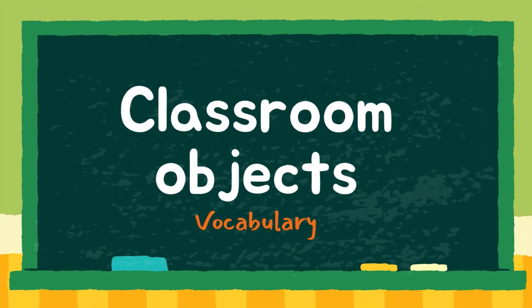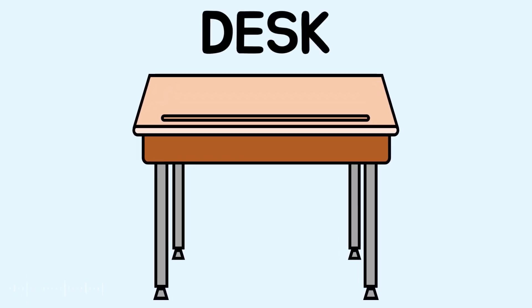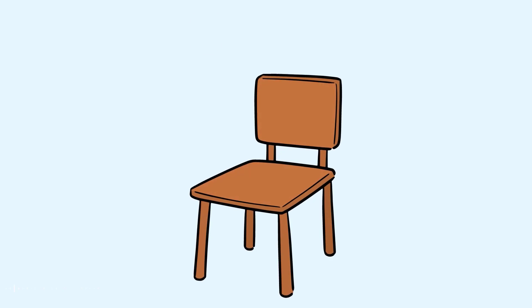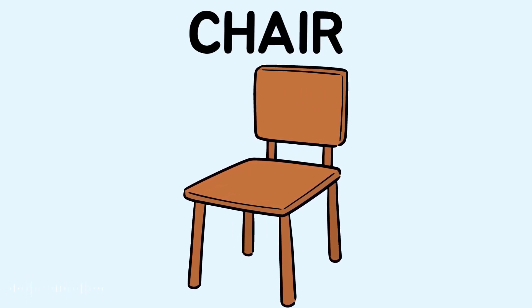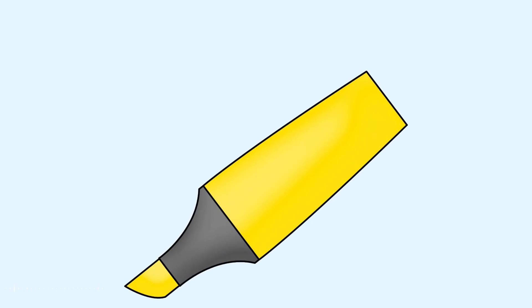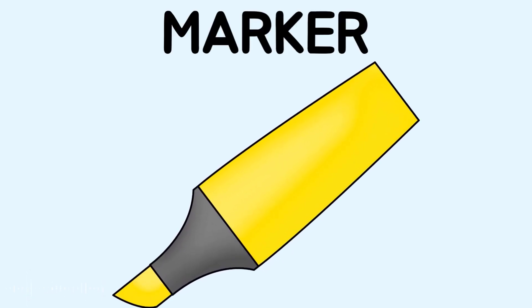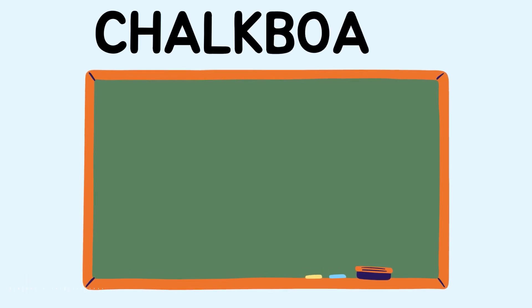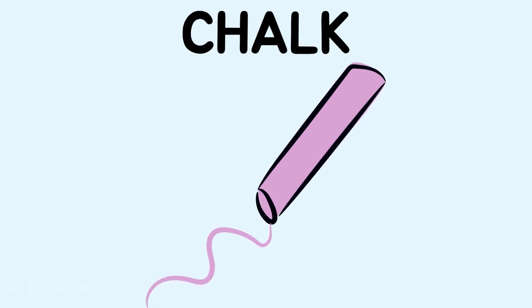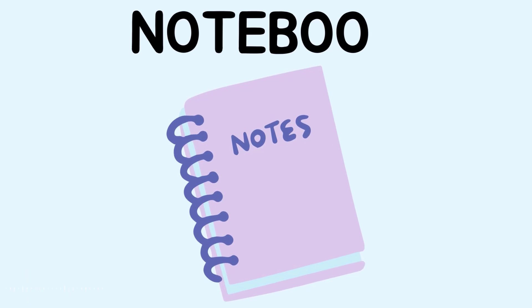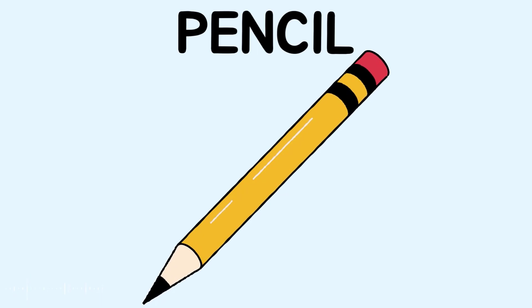Classroom Objects Vocabulary. Desk. Chair. Whiteboard. Marker. Chalkboard. Chalk. Notebook. Pencil. Pen.